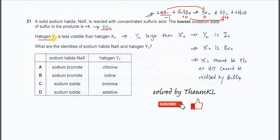Now we need to know that halogen Y₂ is less volatile than halogen X₂. This is a very important hint, because it tells us which one has a larger size. Halogen Y₂ being less volatile means it has a stronger intermolecular force — in this case it is iodine — and therefore halogen Y₂ is larger than halogen X₂.